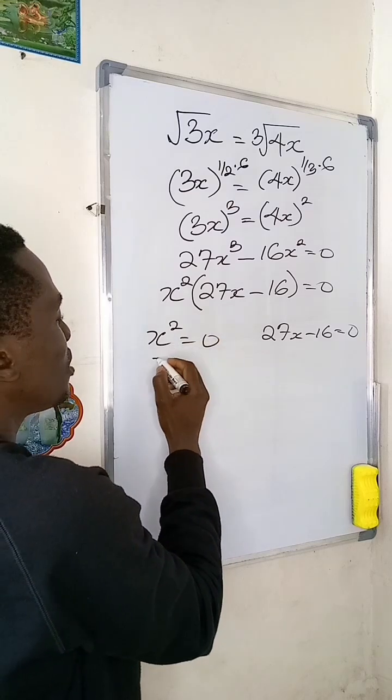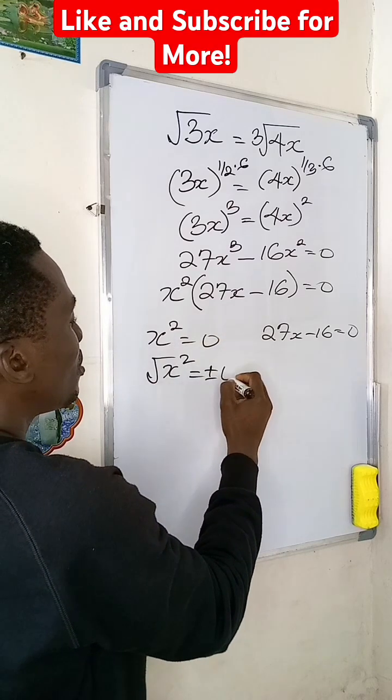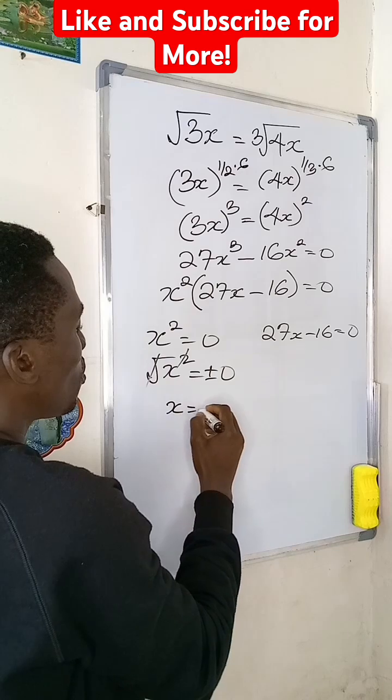From here, if I take the square root of both sides, this will give me plus or minus 0. So my x will be equal to 0.